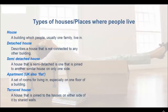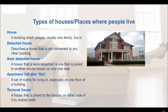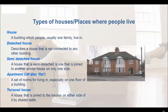Now let's take a look at some types of houses and places where people live. Starting with a house — a building in which people, usually families, live. A detached house describes a house that is not connected to another building. A semi-detached house is a house that's attached, but only on one side.